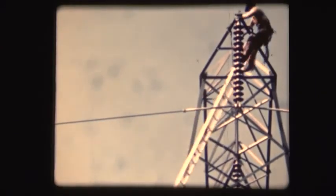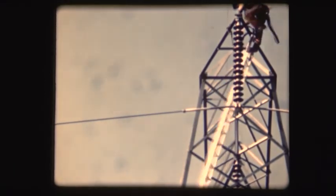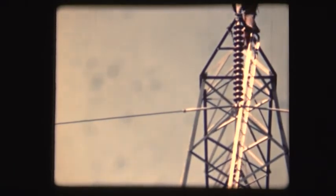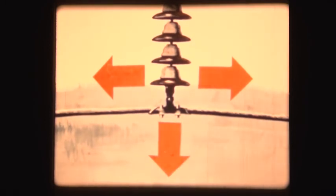As a result of precise engineering and careful workmanship, the suspension insulators of a properly constructed line will hang in a perfectly vertical position. Horizontal forces are in balance, and the only strain on insulator and tower is the vertical pull of gravity.